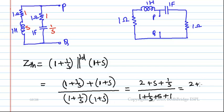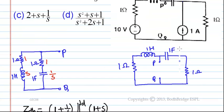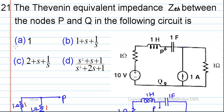We can write it as 2 plus s plus 1 by s divided by the denominator also 2 plus s plus 1 by s. So this will be equal to 1. From the given options, the right answer is option A.